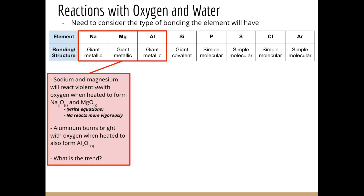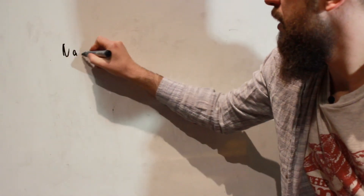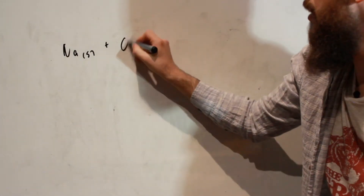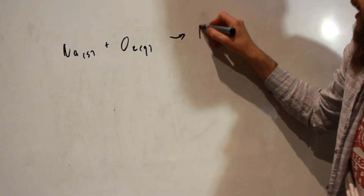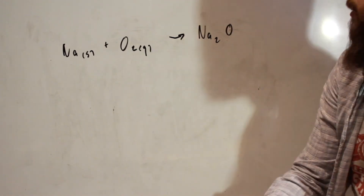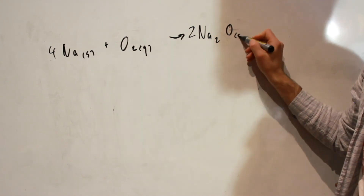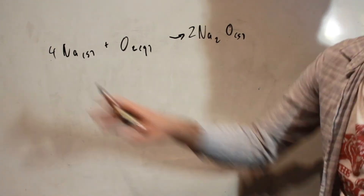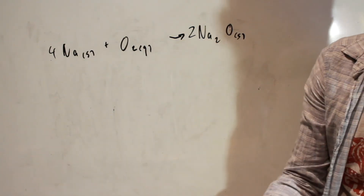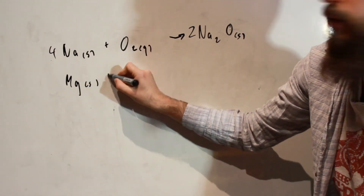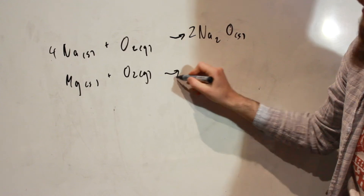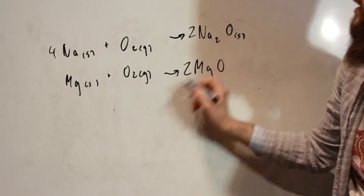Sodium and magnesium will react violently with oxygen when heated to form sodium oxide and magnesium oxide. We have the formation of an ionic compound: sodium metal reacting with oxygen gas to form Na₂O. We heat sodium up and it reacts very violently with oxygen. We see the same thing with magnesium metal reacting with oxygen gas to form magnesium oxide.